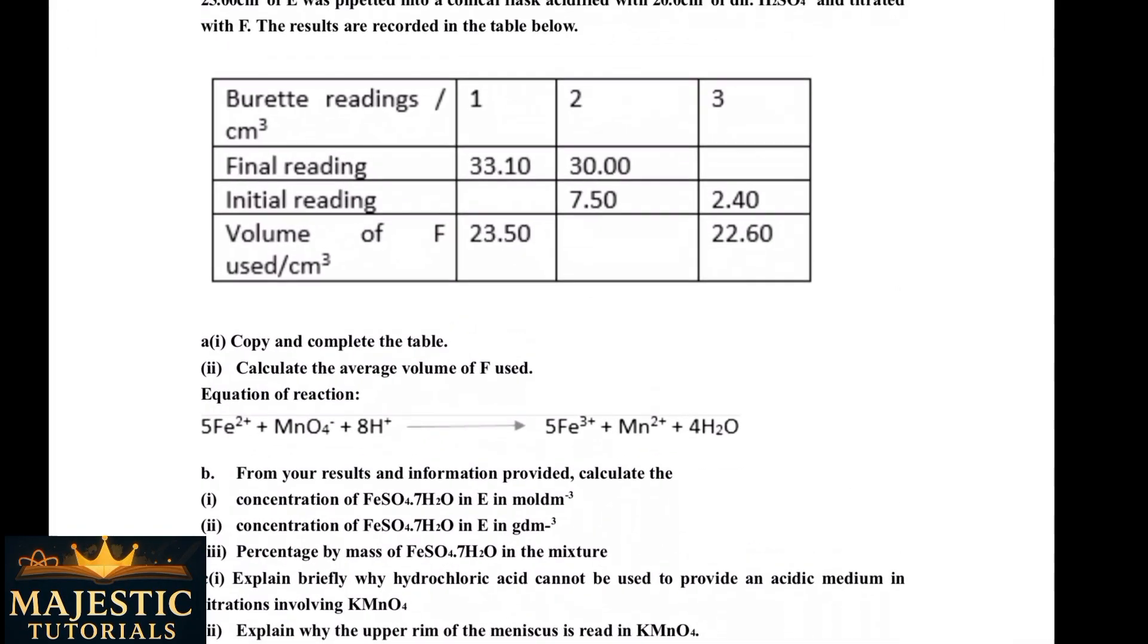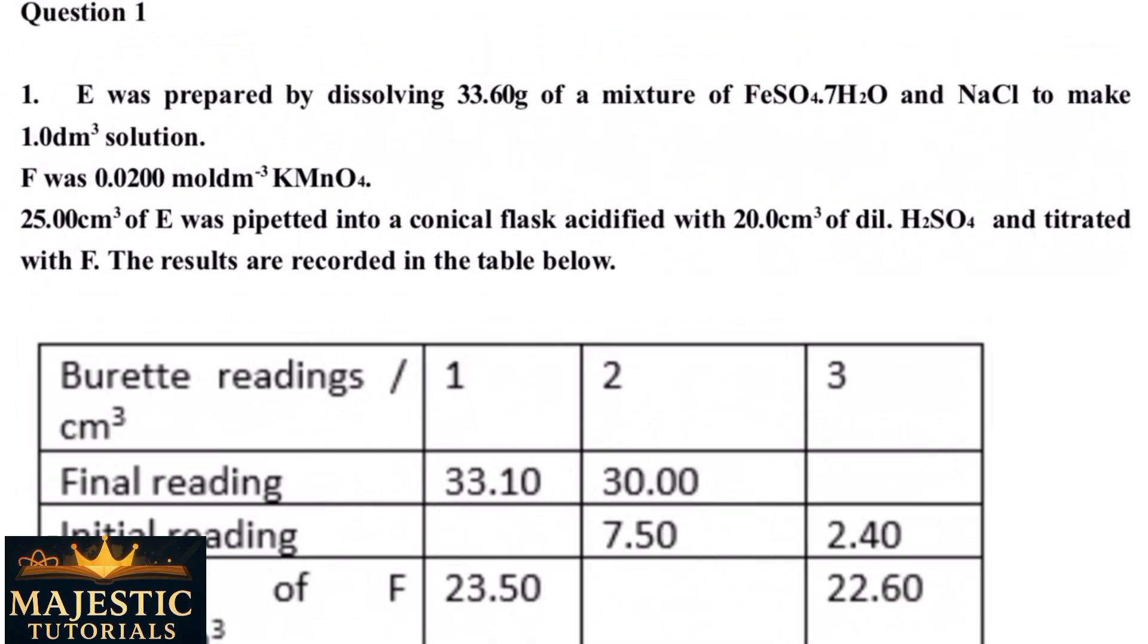Over here I will be handling these questions. So they say E is prepared by dissolving 33.60 grams of a mixture of iron(II) sulfate heptahydrate and sodium chloride to make 1.0 dm³ of solution. F was 0.02 mol/dm³ KMnO₄. Then 25 cm³ of E was pipetted into a conical flask, acidified with 20.0 cm³ of dilute H₂SO₄, and titrated with F. The results are recorded in the table below.